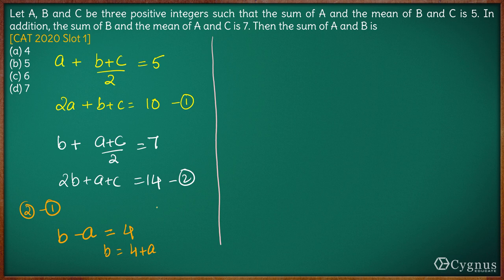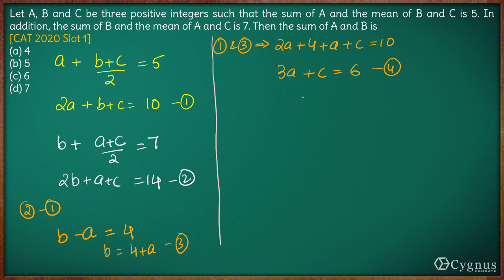Now substituting this value of b, 4 plus a, in the first equation. From first and the third we get 2a plus 4 plus a, instead of b I have substituted 4 plus a, plus c is equal to 10. So I have 3a, 2a plus a is 3a plus c is equal to 10 minus 4 which is 6. Let us call this as the fourth equation.